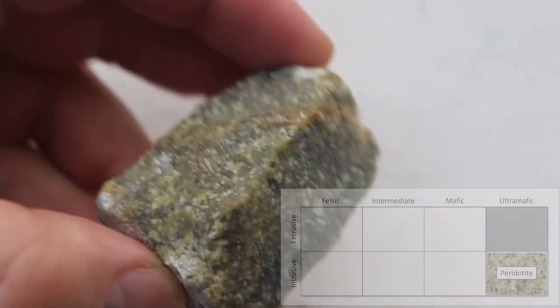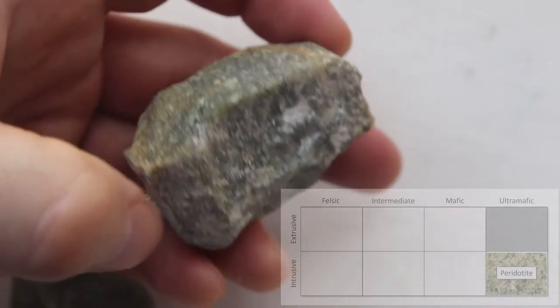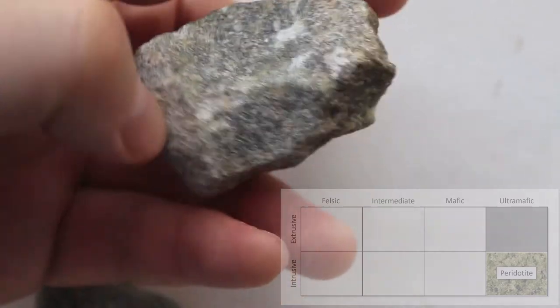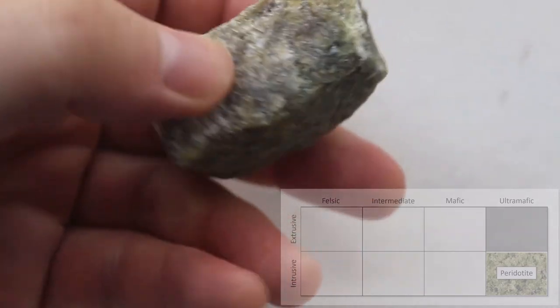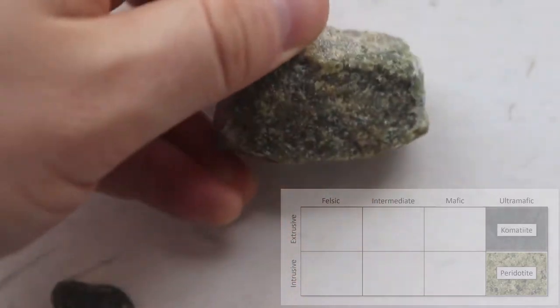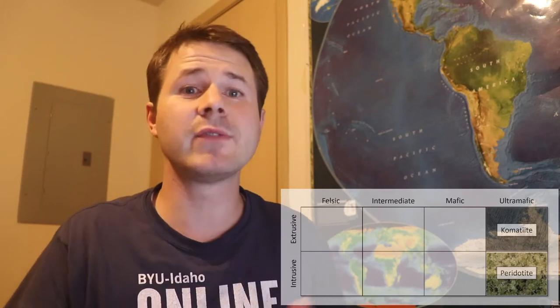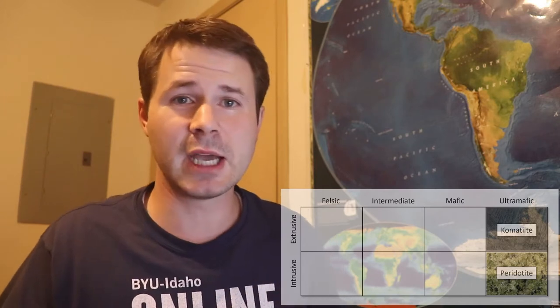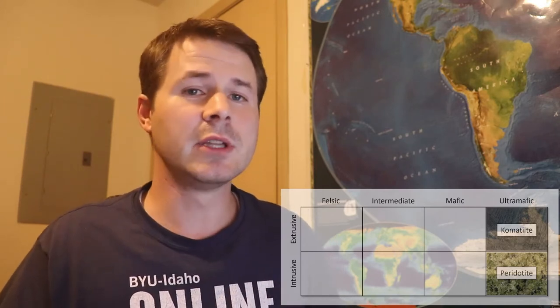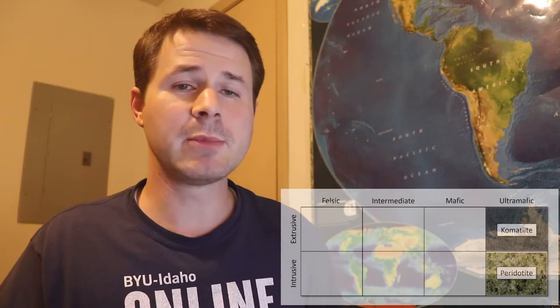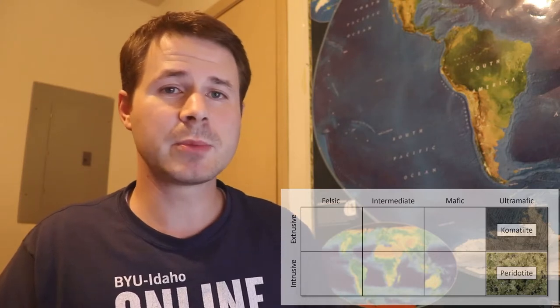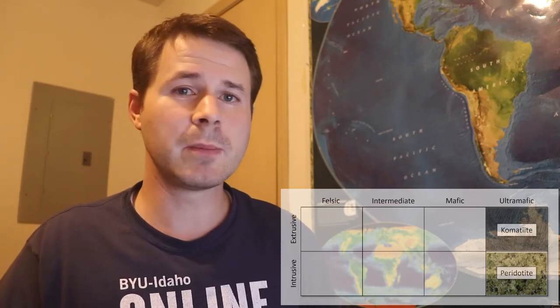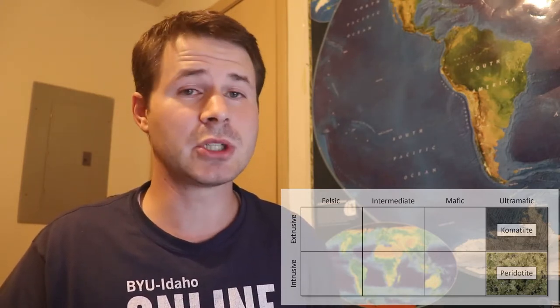Komatiite is a rock that is also ultra-mafic and extrusive. You're not going to see komatiite — there's very little of it. The only komatiite eruptions I'm aware of occurred billions of years ago when the earth was much hotter than it is today.